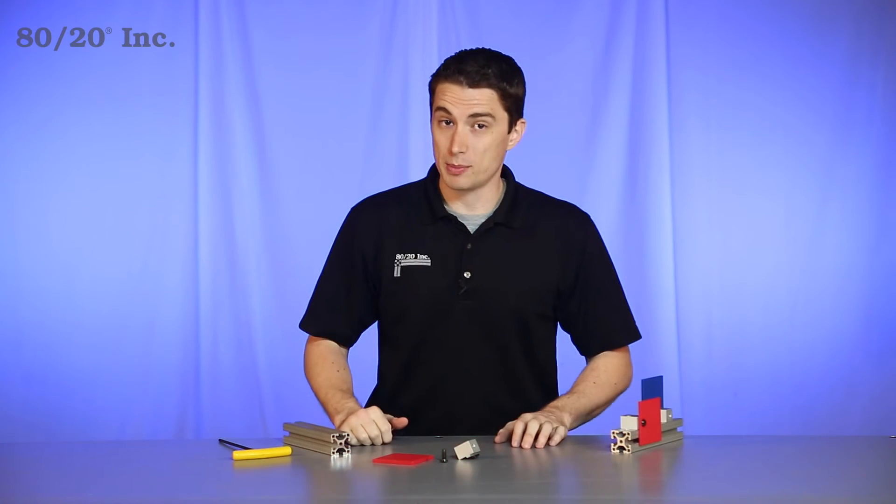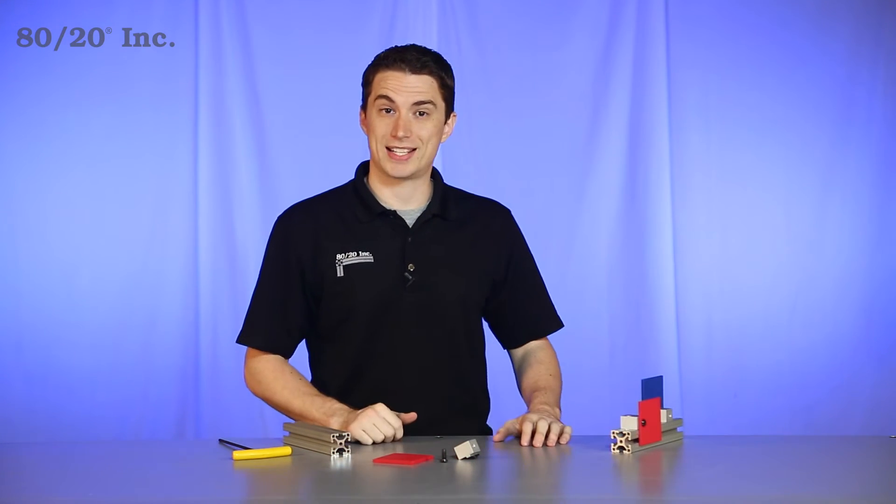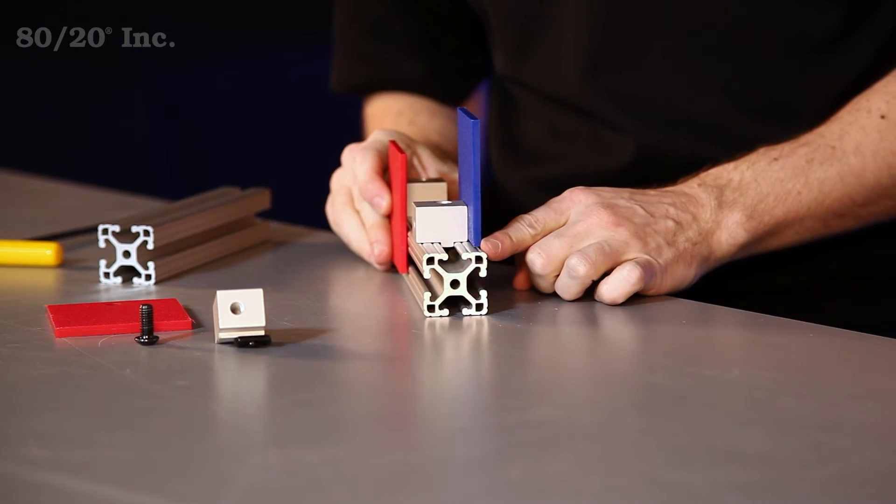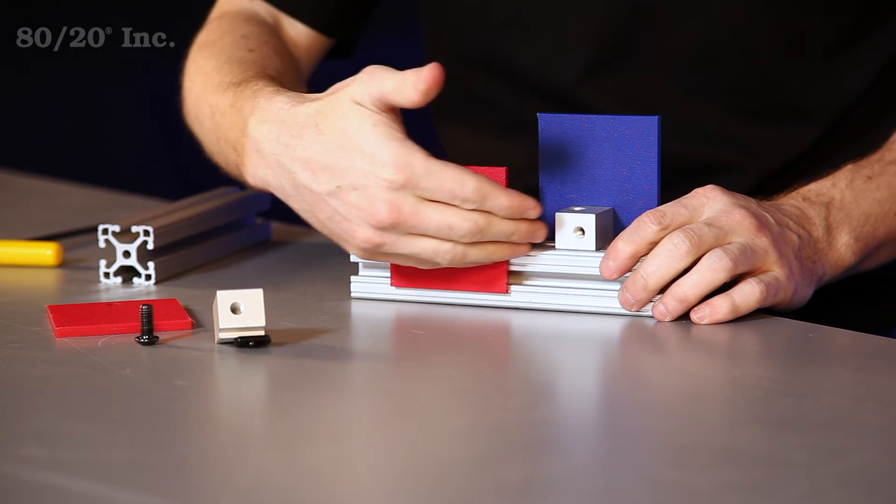Now when it comes to installing the panel mount block, the first thing you want to decide is how it's going to mount to the profile. Do you want it to be flush with the profile edge or resting on the surface of the profile?